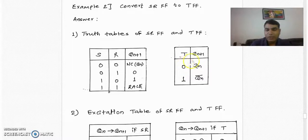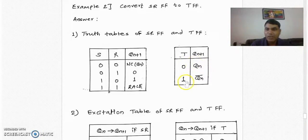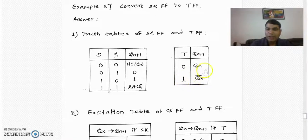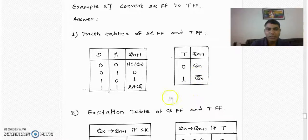The truth table of T flip-flop: when T is 0, there is no change in the next state output, so Qn remains as it is. When T is 1, it toggles and the next state output is Qn-bar. This is the truth table of the T flip-flop.